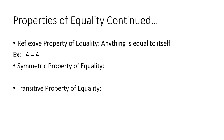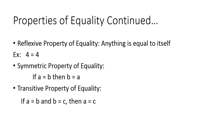You'll see these but won't use them as frequently. The reflexive property of equality: anything is equal to itself — so 4 equals 4, 5 equals 5, x equals x. The symmetric property of equality states that if A equals B, then B equals A. The transitive property of equality states that if A equals B and B equals C, then A equals C.